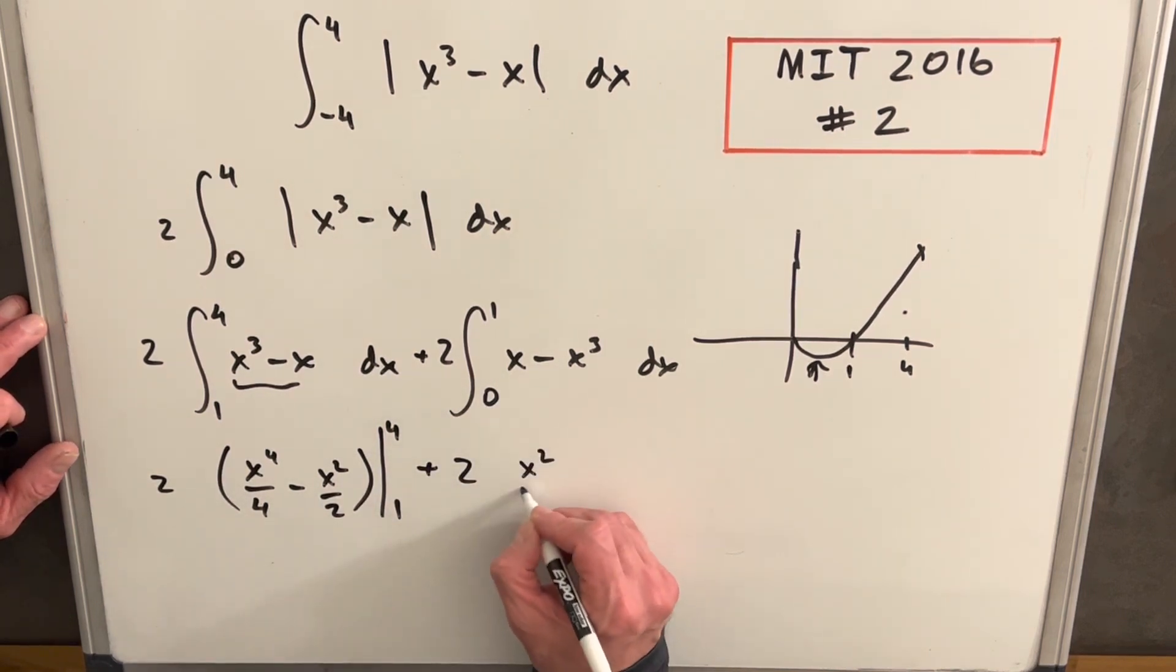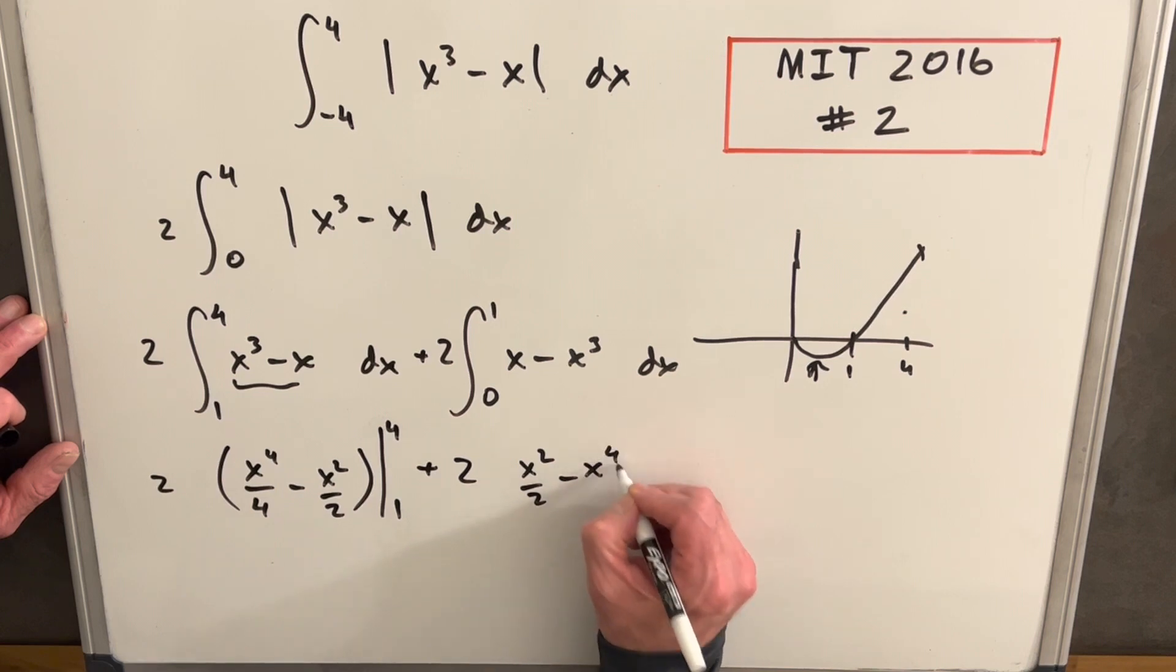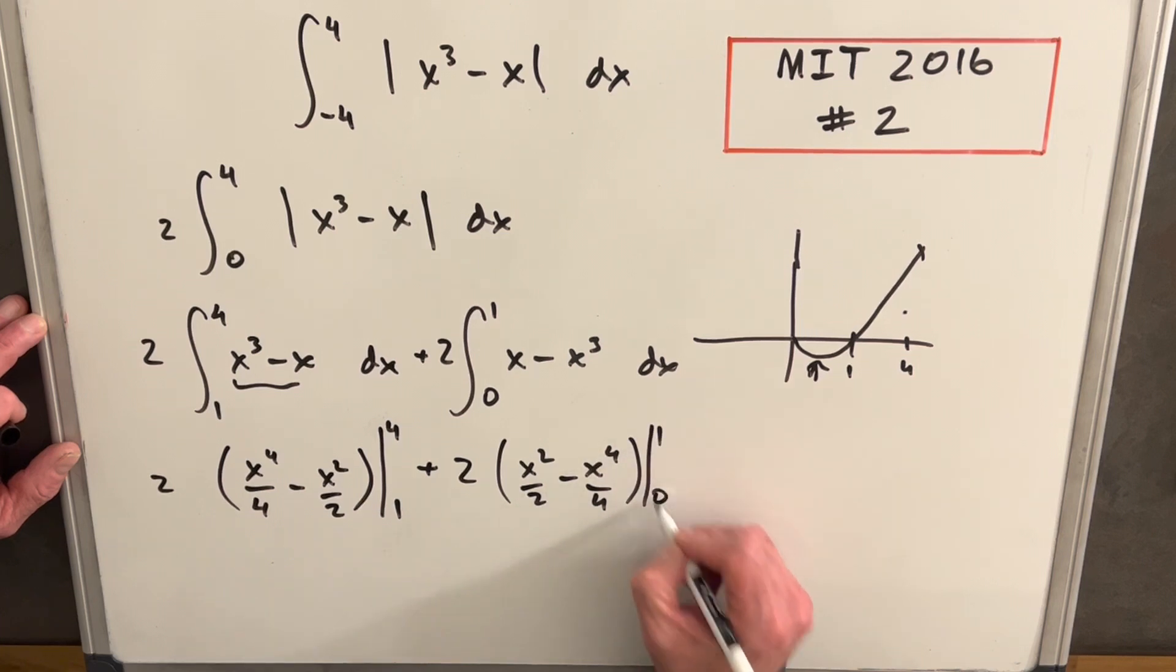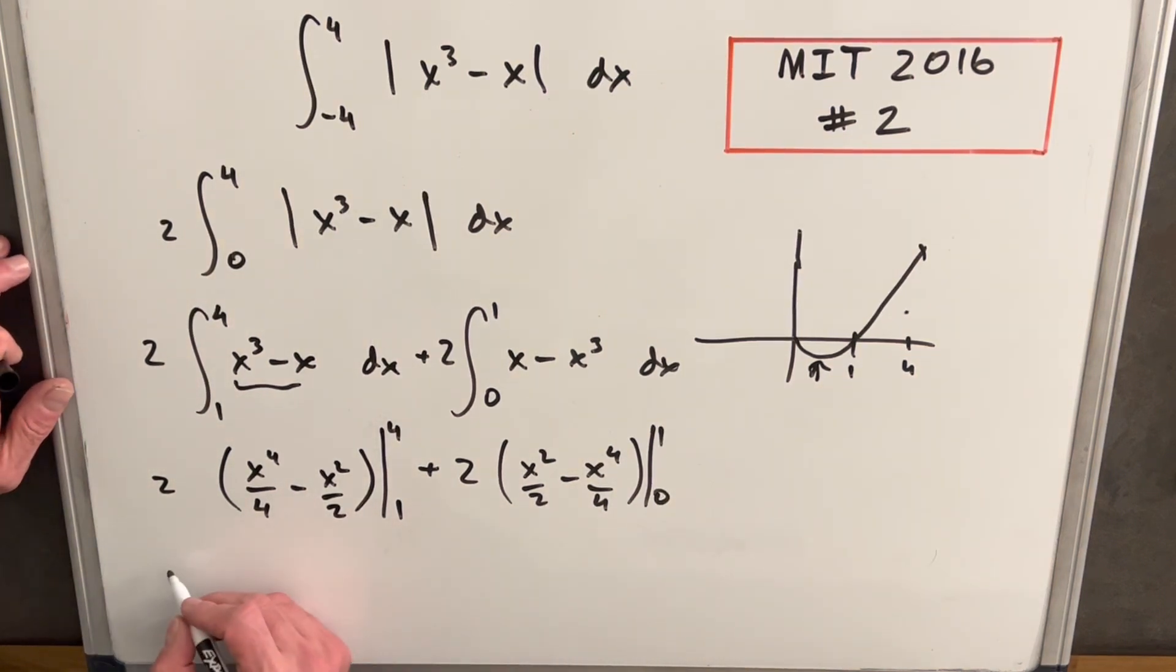basically the same thing almost, minus x to the fourth over four. And we're just going to evaluate that from one to zero. All we need to do is plug in values and evaluate this.